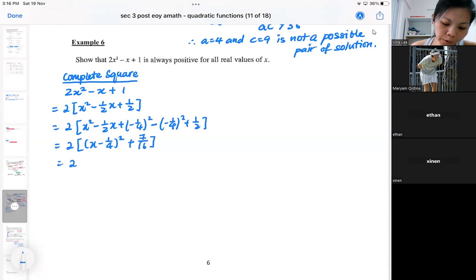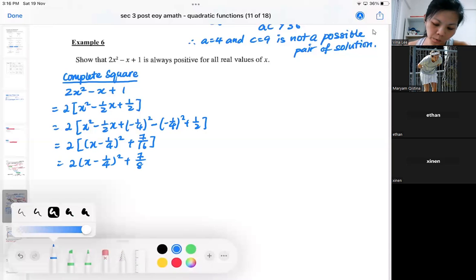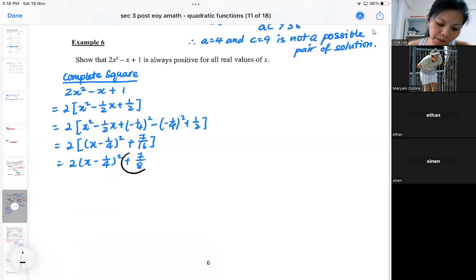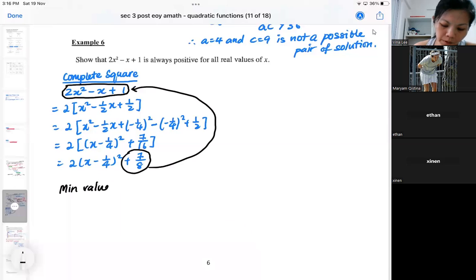If you do the complete square that you already practiced in example one, this is what you will have gotten. You should realize that it will tell you the minimum value of the function. The minimum value of the function is 7/8, which is positive.